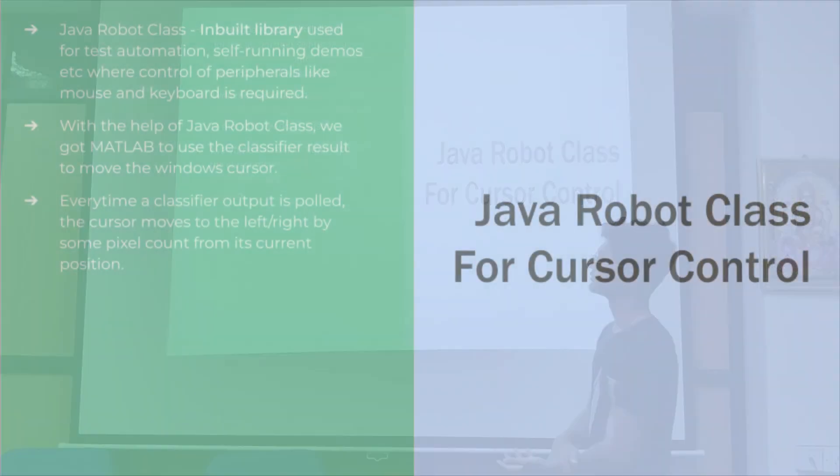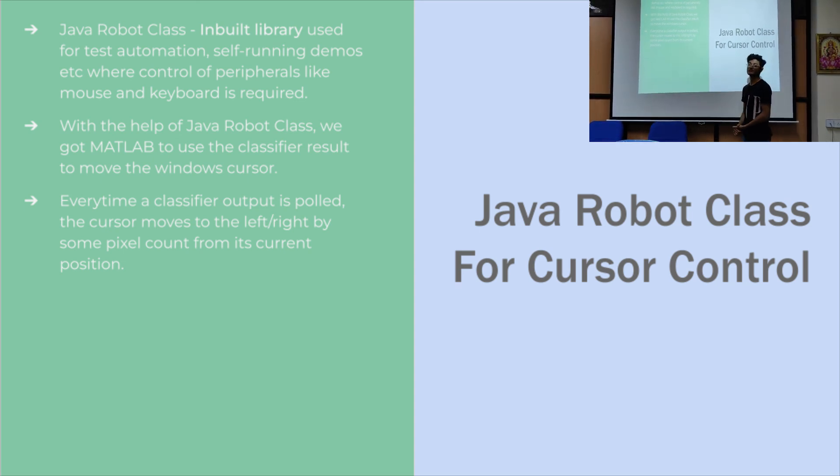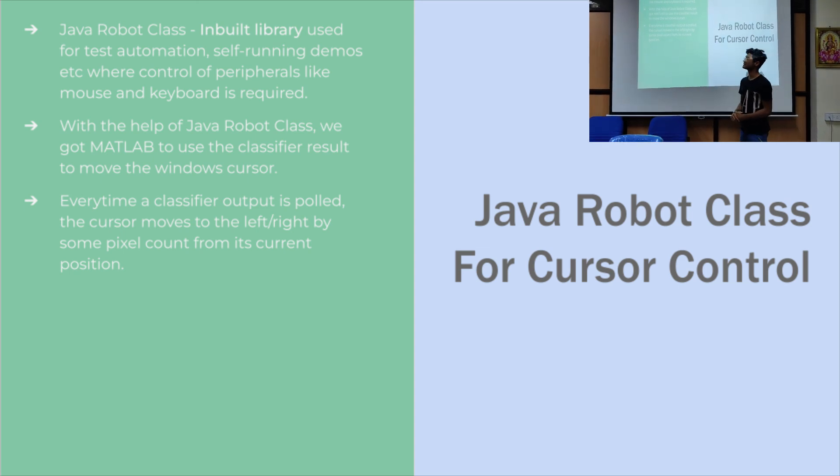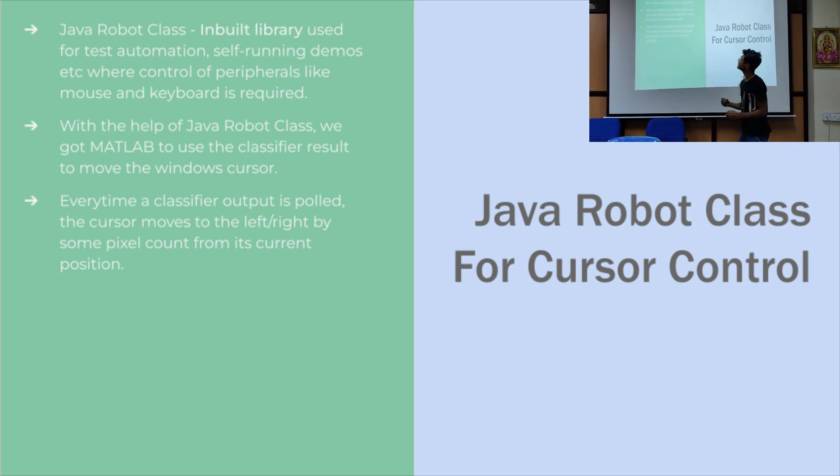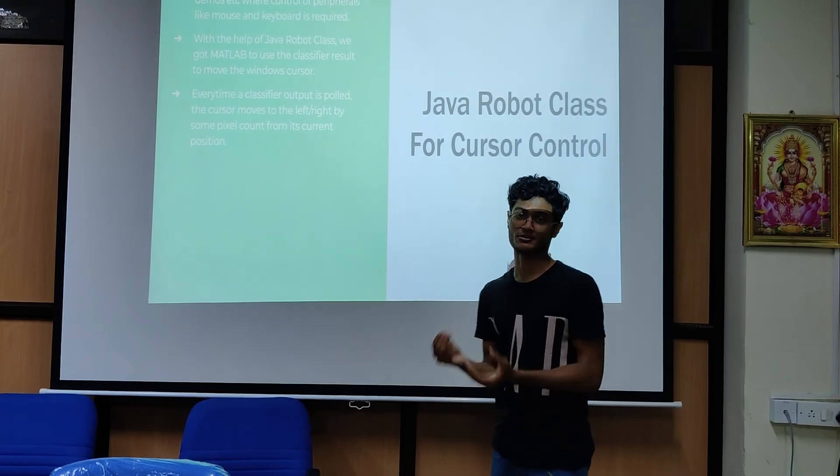So we used our Java Robot Class for cursor control. Java Robot Class essentially is an inbuilt library used for test automation, self-running demos, etc. where you need to use the control of peripherals like mouse or keyboard. In this case, we're using the control of mouse. So with the help of Java Robot Class, we got MATLAB to use the classifier result, which is a scalar of plus or minus 1, to move the windows cursor. So every time a classifier output is polled, the cursor moves to the left or to the right by some fixed pixel count from its current position.